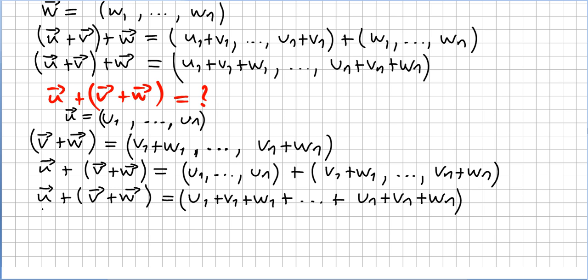So what is u plus (v plus w)? That will be u1 plus v1 plus w1, right? etc., u2 plus v2 plus w2, and then un plus vn plus wn.